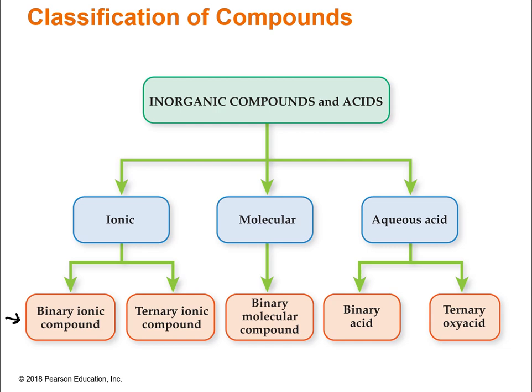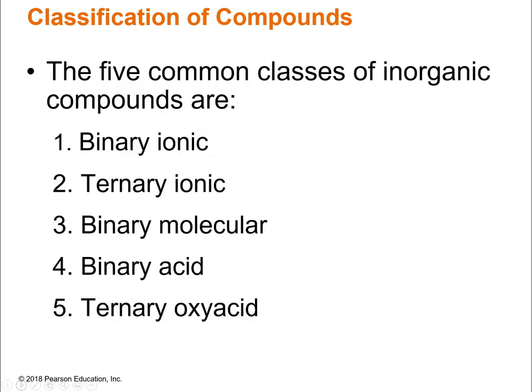These five subclasses are the ones we will be dealing with today — the five common classes of inorganic compounds. We've got binary ionic, ternary ionic, binary molecular, binary acid, and ternary oxyacid. Make sure you get those locked in. I'm going to use those abbreviations because it's a lot to write. Let's break down some of these words a little bit so that when we get into classifying our compounds, it makes more sense.